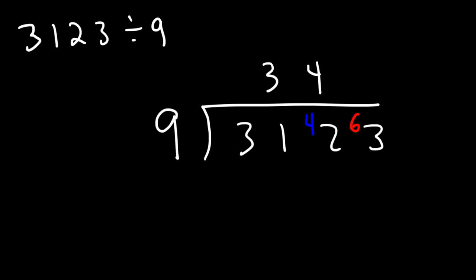Now how many times does 9 go into 63? 9 goes into 63 seven times. And it's exactly 7 times with no remainder. And so 3123 divided by 9 is equal to this answer, 347. And so that's another example of how to do short division.